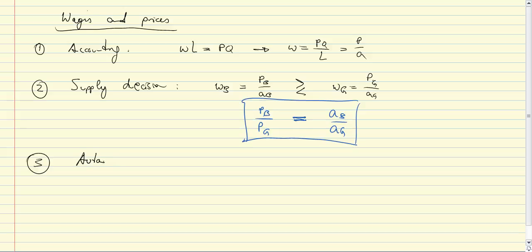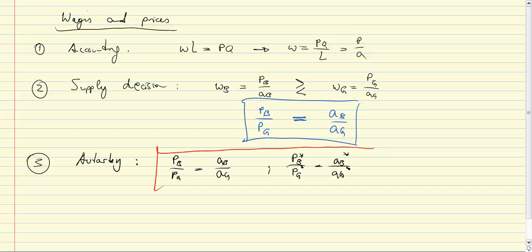In conclusion, in autarky with perfect competition, we know that PB over PG equals AB over AG for the home country, and that PB star over PG star equals AB star over AG star for the foreign country. With these two points we can begin mapping the graph.